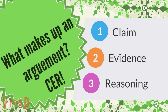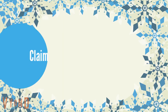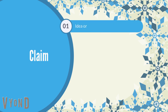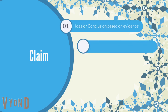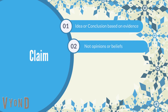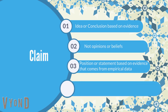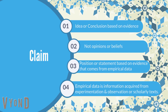Let us now look at the elements that make up an argument. Claim: it is an idea or conclusion that you have come up with based on evidence. In STEM, claims are not opinions or beliefs. A claim in STEM disciplines is a position or statement based on evidence that comes from empirical data. Empirical data is information acquired through experimentation and observation or from scholarly texts.